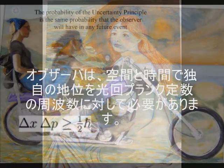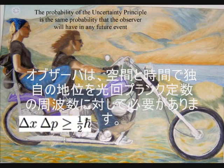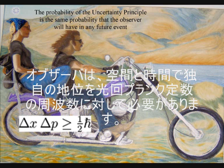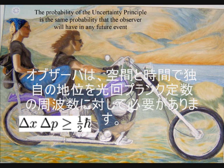Put in a more scientific way, Heisenberg's uncertainty principle of quantum physics is the same uncertainty that the observer will have with any future event.